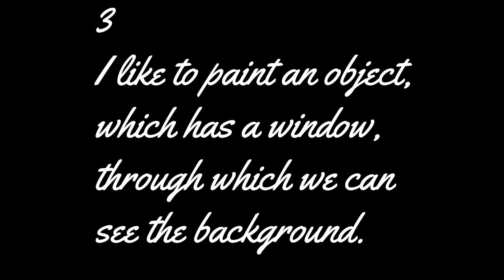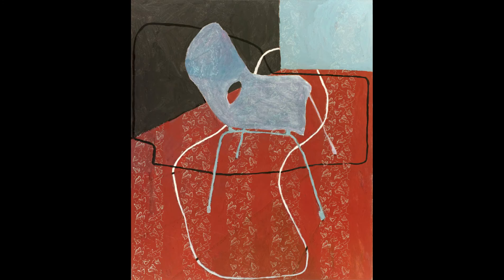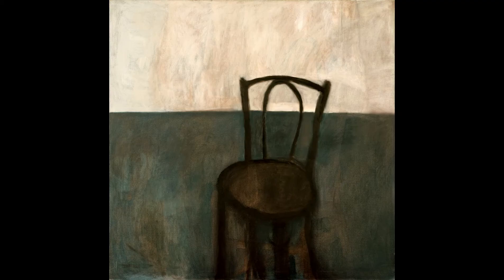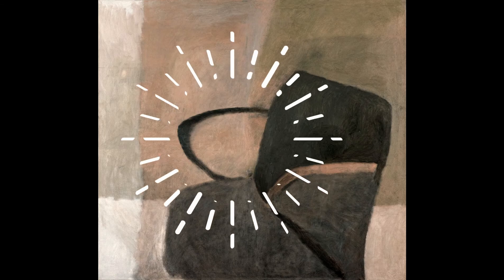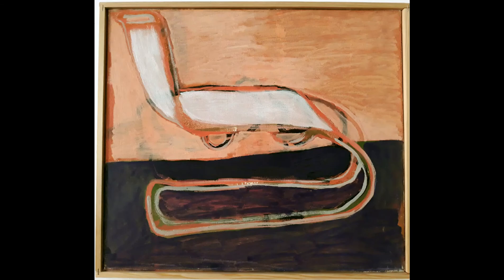Third — and I know this sounds silly — but I like to paint an object which has something like a window, through which we can see the background. Like a handle hole, or the armrests, or at least the legs together with the floor.